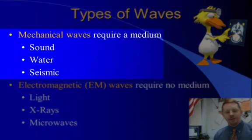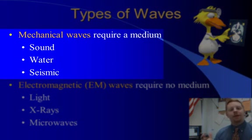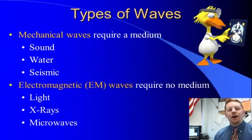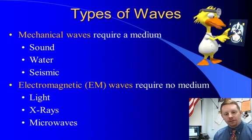Mechanical waves require a medium or some substance to travel through. Things like sound or water or seismic waves, they all travel through a medium. Sound travels through the air or water or wood. Water waves travel through water. Seismic waves travel through the earth.